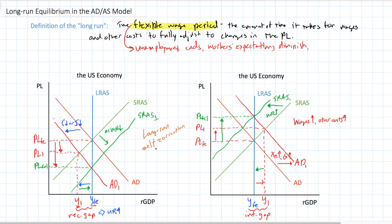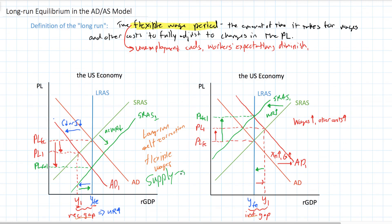In the long-run, an economy will correct itself following recessionary gaps and inflationary gaps because of flexible wages. The only reason negative and positive output gaps can occur in the short-run is the inflexibility of wages. This has policy implications: if a government experiencing a recession believes in the long-run self-correction viewpoint, then making wages more flexible — for example, reducing the period of unemployment benefits, reducing minimum wages, reducing labor union power — would help the economy recover more quickly. Policies that promote self-correction are called supply-side policies, which are any policies meant to increase aggregate supply and help an economy achieve short-run or long-run economic growth.